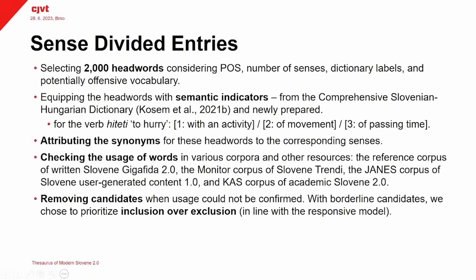We took semantic indicators from the comprehensive Slovenian–Hungarian dictionary, and for some headwords we also had to prepare them anew. Semantic indicators are short descriptions of word senses that help differentiate a specific sense from all the other senses of a headword. So for example, for the verb hiteti you would have 'to hurry with an activity,' 'to hurry with movement,' or 'to hurry pertaining to the passing of time' — we have czas hiti, 'time flies.' After we had the indicators, we attributed the synonyms to the corresponding senses after checking usage in various corpora and other resources. We also used the collocation dictionary and the sketch diff function of the Sketch Engine.